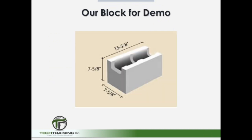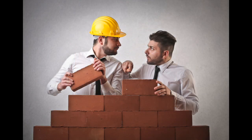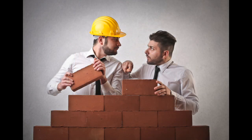For our demonstration today, we will be using a standard 8x8x16 concrete masonry unit. By now you probably know that these are nominal sizes only, and the actual size is 7-5/8 by 7-5/8 by 15-5/8. So now let's proceed with testing our units for absorption.